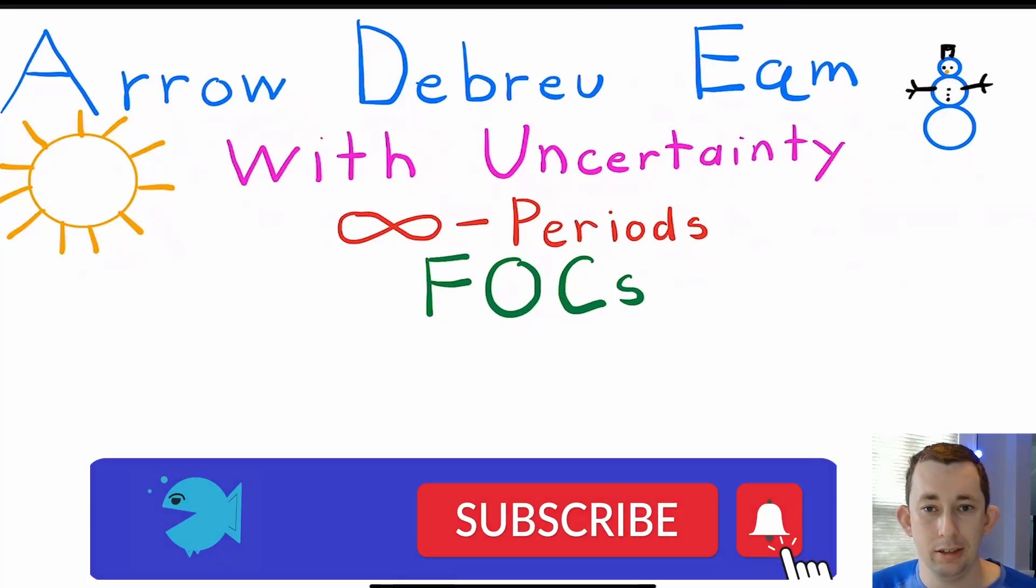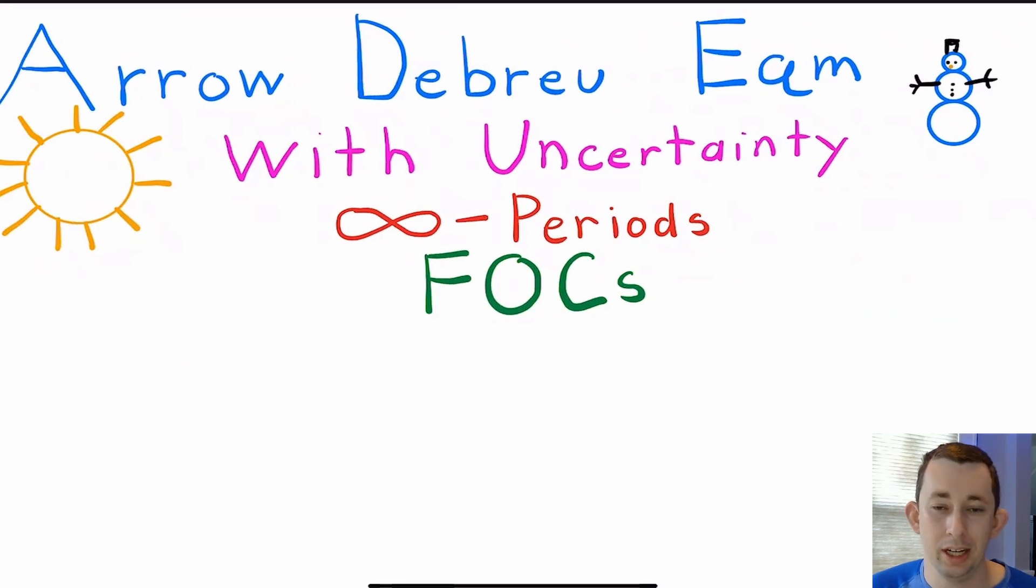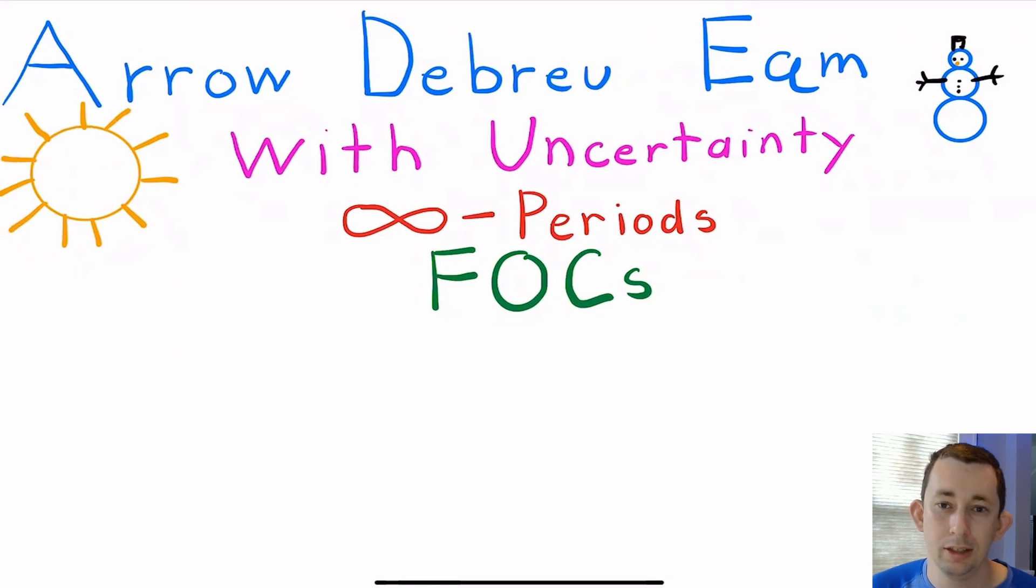Hi guys, welcome back to In Case of Econ Struggles. Today we're talking about Arrow-Debreu equilibrium with uncertainty in an infinite period problem. We're going to be talking about the first order conditions based on the setup to the problem that we talked about last time. So let's get into it. Timestamps are below if you would like to jump around.